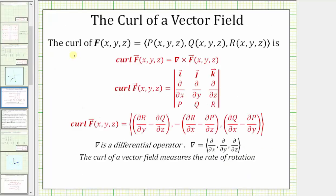The curl of a three-dimensional vector field is equal to the differential operator crossed with the vector field f, which gives us a three-by-three determinant. If we expand this three-by-three determinant, we get this formula for the curl of a vector field f in three dimensions.